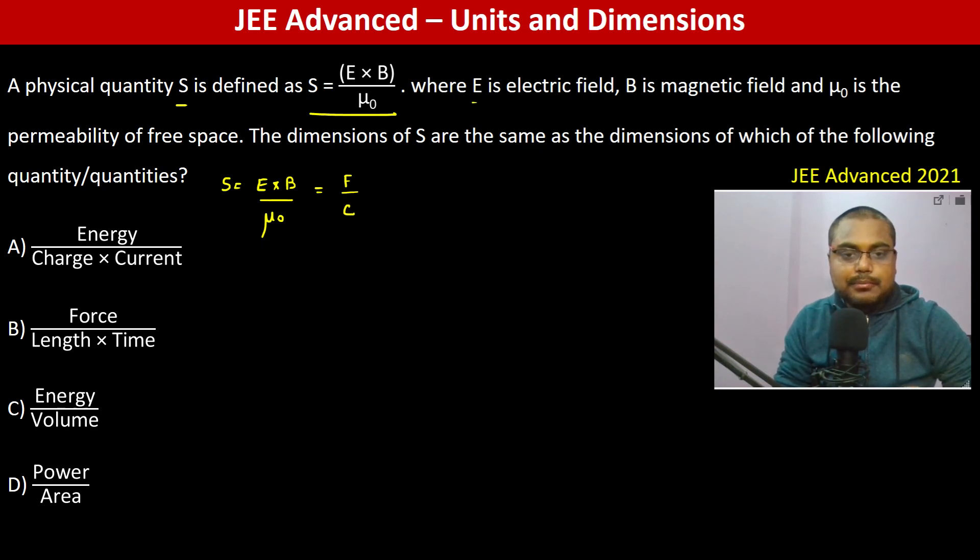For magnetic field B, using Biot-Savart law: B equals mu₀ by 4π into i·dl cross r divided by r cube. So B by mu₀ is i·dl cross r divided by r cube, of course one by 4π. Dimension-wise, i is ampere into dl meter, meter cube, so therefore it is ampere per meter.